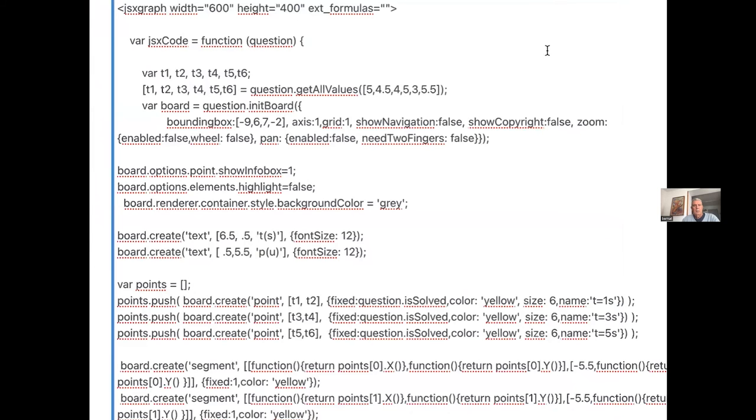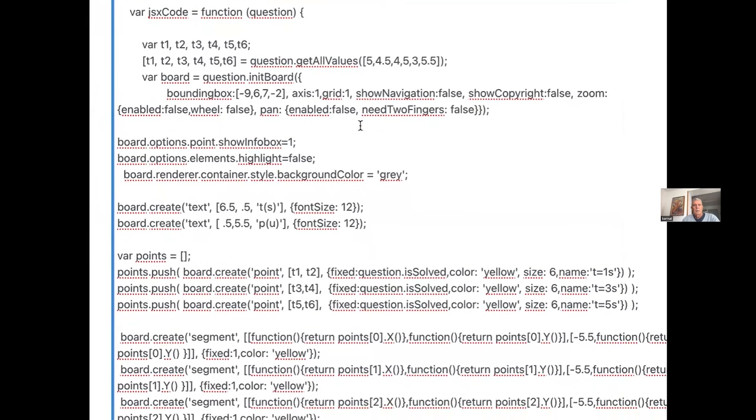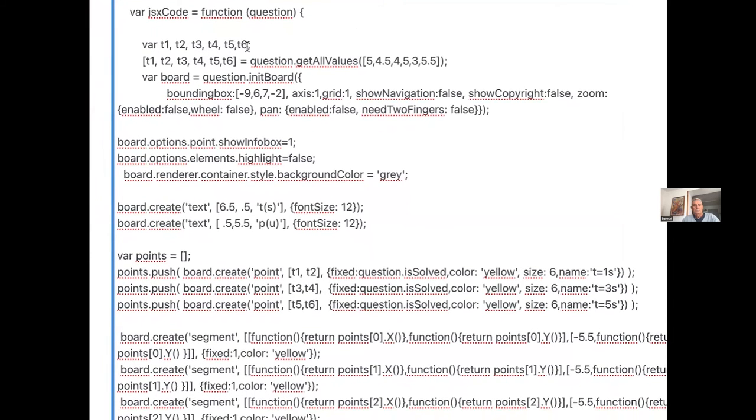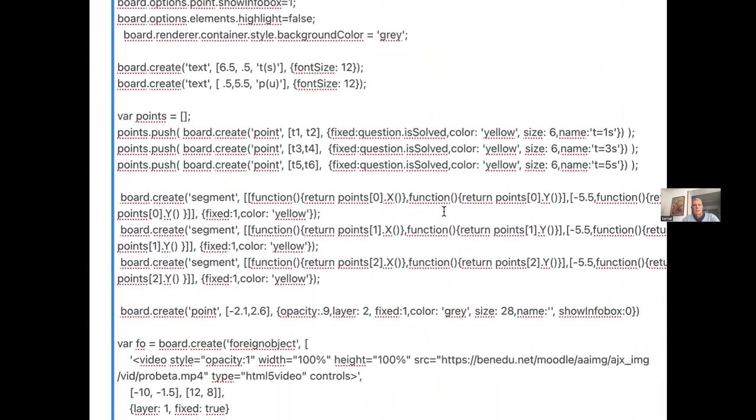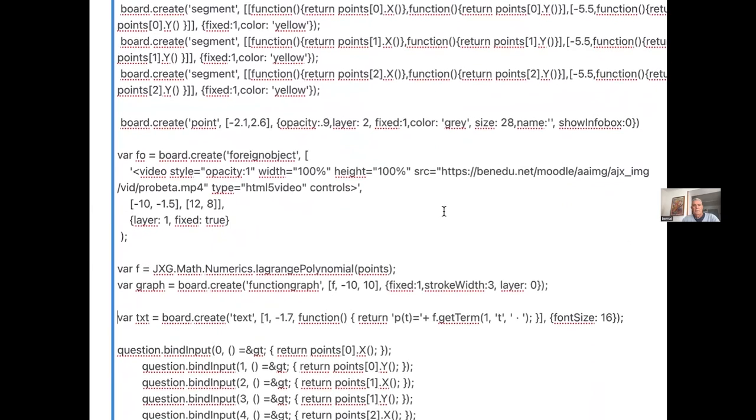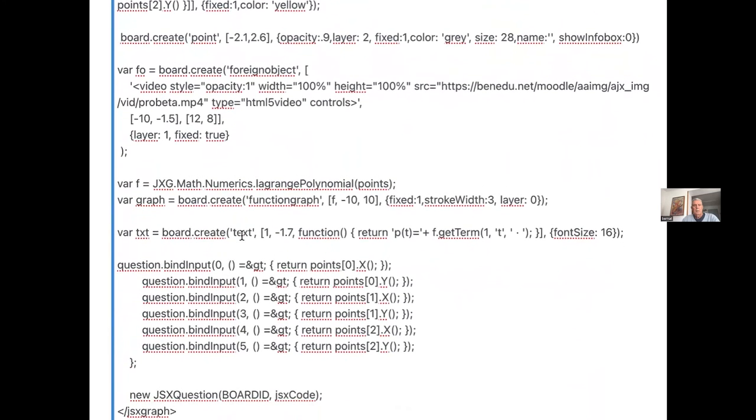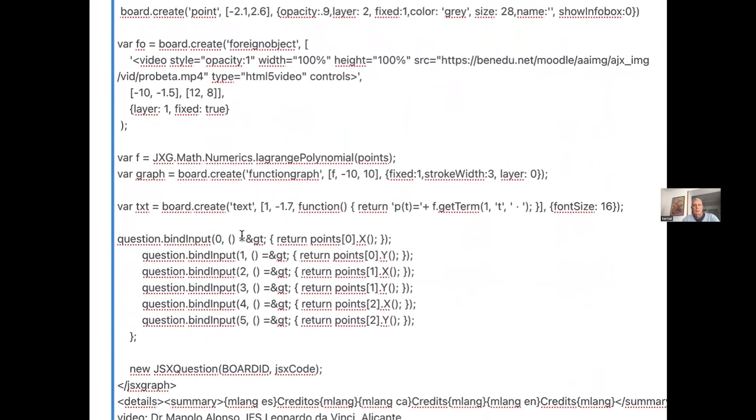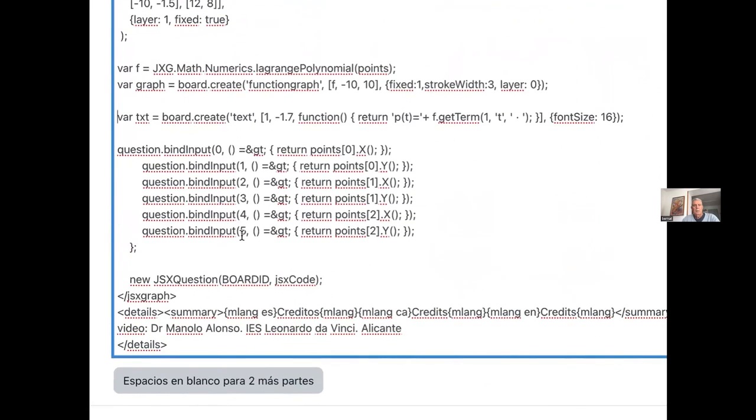And then this is the code. The code is a formulas question type. There are six variables as the six coordinates of the points. And here it's where the foreign object is introduced. It's a video. And as you see, the code is quite easy.